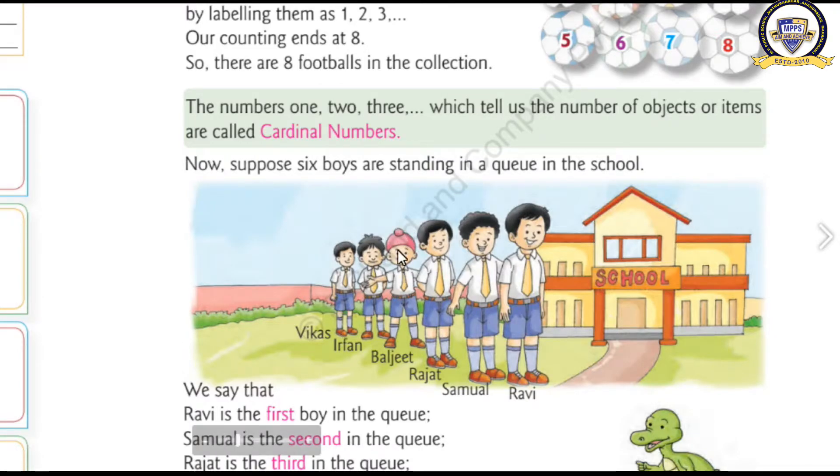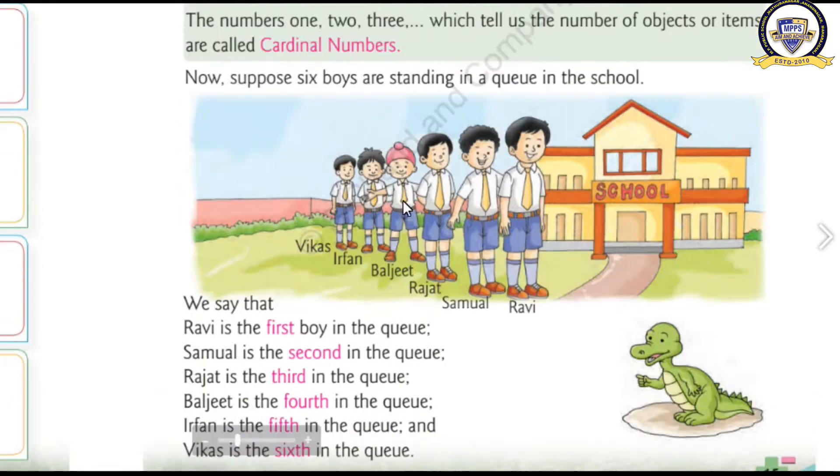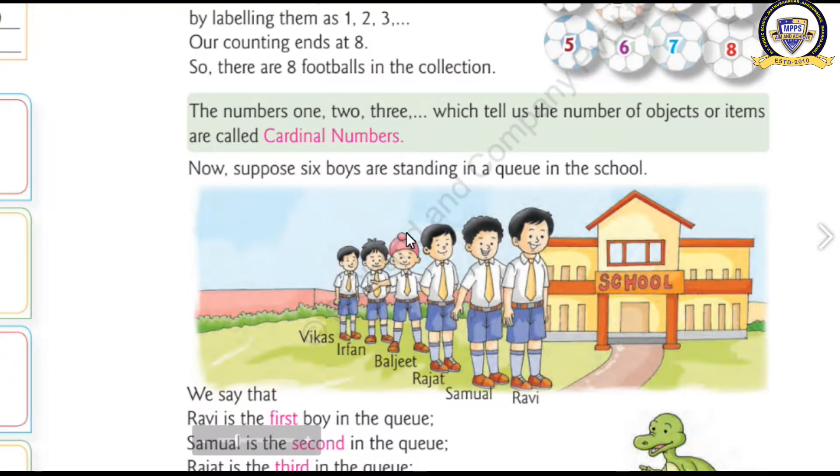And just behind Ravi, we are seeing Samuel. He is standing just behind Ravi. So, he is the second fellow. Then Rajat. Rajat is next to Samuel. That is why Rajat is at third place. Then Baljeet, Sardarji, he is at the fourth place. And Irfan, he is at the fifth place. And at last, Vikmas, he is at the sixth place.